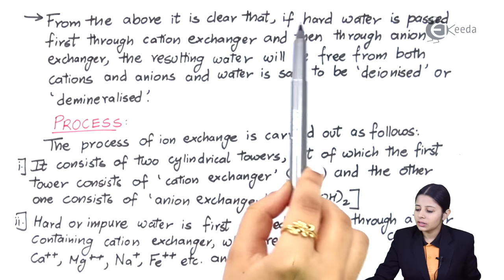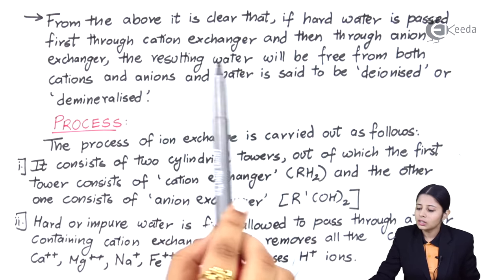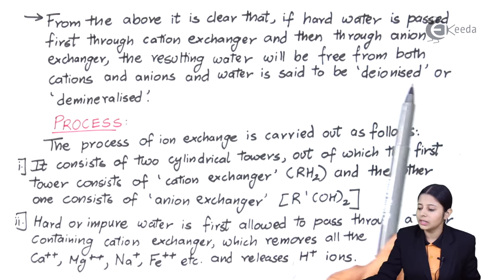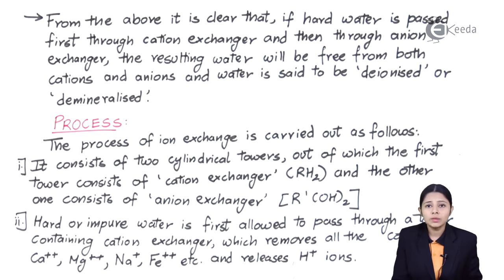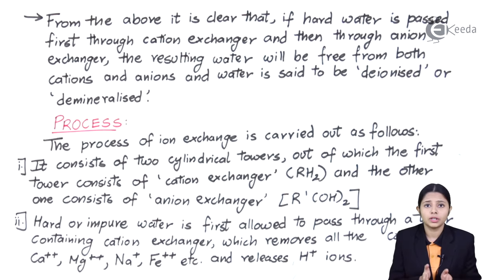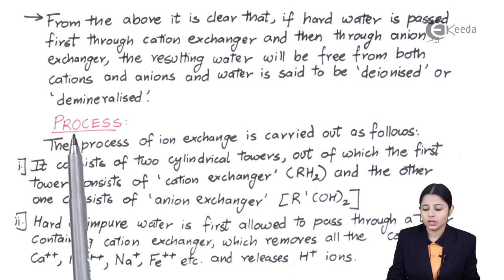From the above, it is clear that if hard water is passed first through the cation exchanger and then through the anion exchanger, the resulting water will be free from both cations and anions and is said to be de-ionized or de-mineralized. This method removes not only temporary hardness but also permanent hardness — so both types of hardness can be removed. The impure water is passed through the cation exchanger, then through the anion exchanger, and lastly through the gaseous chamber.